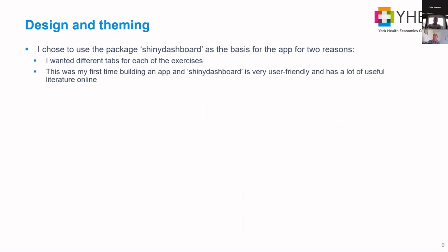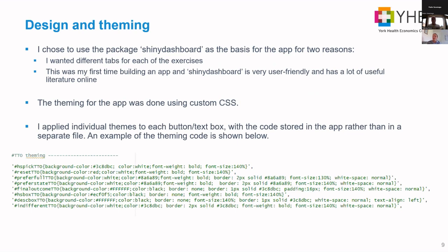For design and theming, I mainly used the Shiny Dashboard package as the basis for two reasons. First, when I visualized what I wanted to build — different tabs for each exercise — the Shiny Dashboard navbar was perfect for it. Second, this was my first time building an app in R and Shiny Dashboard is very user-friendly with lots of literature online. The theming was all done using custom CSS, with individual themes for each text box and button — background colors, borders, font sizes.